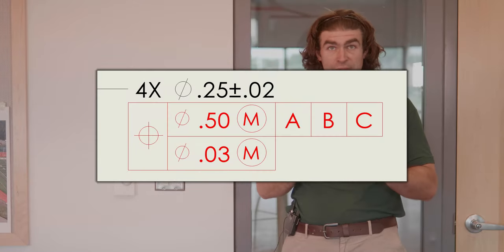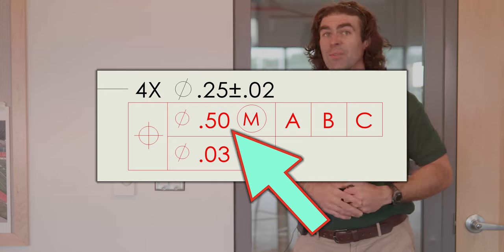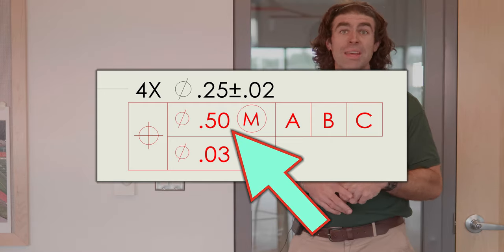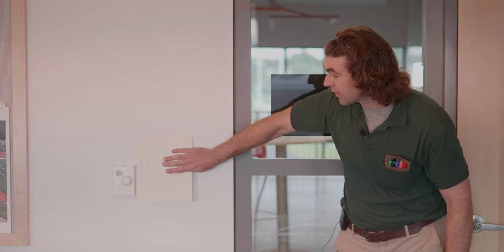So back to the topic of the video, composite tolerances. What we do is separate the location of the pattern of the holes from the holes to each other. So on the screen here, you'll see that first number, that first tolerance is big. We'll say it's a diameter of a half an inch. That is where the pattern of holes is. So imagine we make a template, stick it on the wall. We got to be a half inch. So we stick it on there.